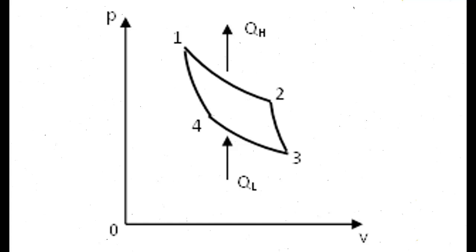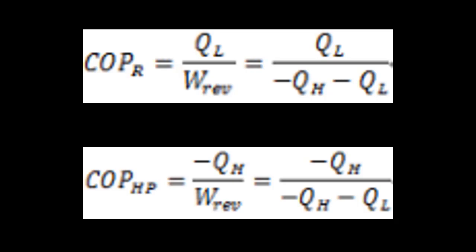Process 4 to 3 is reversible isothermal expansion at TL equals constant. During this process heat is absorbed. Gas is compressed reversibly at the constant temperature TH.